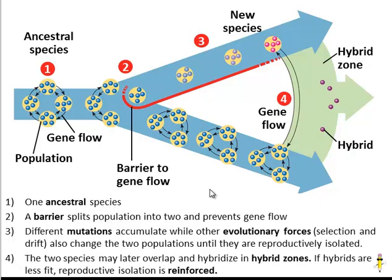In some cases, the species may overlap and meet again and even hybridize. But if those hybrids from the two species are less fit, we still have reproductive isolation being reinforced.